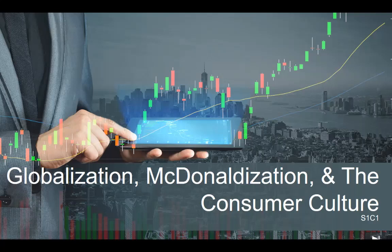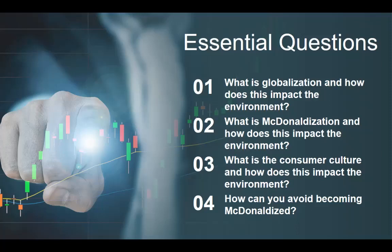Let's jump into the essential questions. Number one: what is globalization and how does it impact the environment? Number two: what is McDonaldization and how does it impact the environment? This does relate to McDonald's — we'll talk about that when we get there. Number three: what is consumer culture and how does it impact the environment? Notice these processes of economic development we're discussing today are always tied back to environmental impact. And number four: how can you avoid becoming McDonaldized? Can you avoid becoming McDonaldized? The first thing we should do is define globalization, as it's really the process that will allow these other two pieces to come into play.